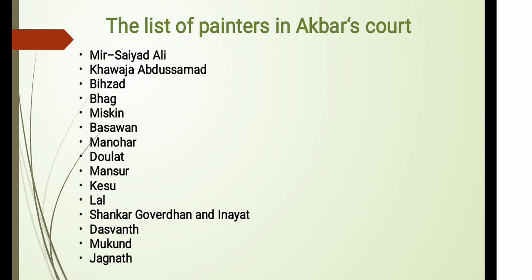Here we have a list of painters in Akbar's court. The first is Mir Sayyid Ali of Tabriz, second is Khwaja Abdus Samad of Shiraz, third is Behzad (Persian artist), fourth is Bagh, fifth is Miskin, sixth is Basawan, seventh is Manohar, eighth is Dalat, ninth is Mansoor, tenth is Kesu, eleventh is Lal, twelfth is Shankar, Govardhan, and Inayat, thirteenth is Svant, fourteenth is Mukund, and the last is Jagannath.